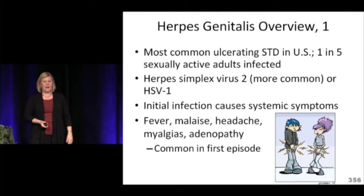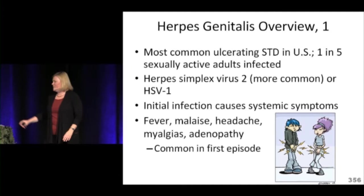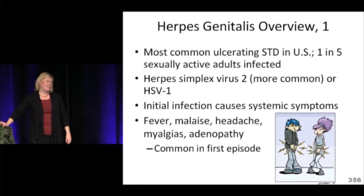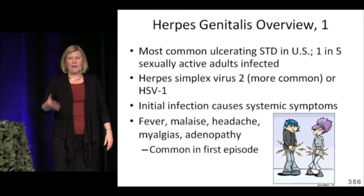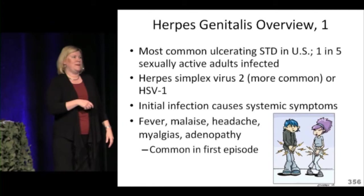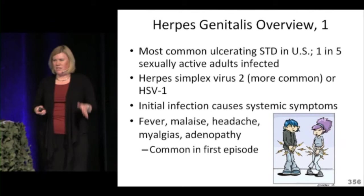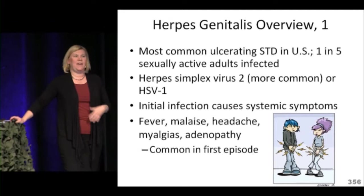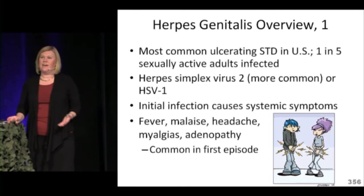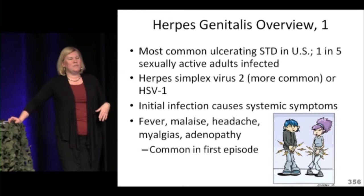Herpes is the most common ulcerating STD in the United States — about 20% of sexually active adults are infected. Genital herpes is more commonly HSV-2 than HSV-1. With the initial infection, patients have systemic symptoms: myalgias, malaise, and possibly fever, along with the painful lesions. These systemic symptoms are more prominent in the first episode and less common in recurrences.